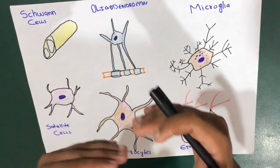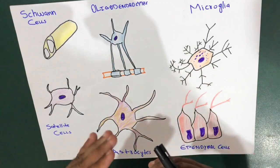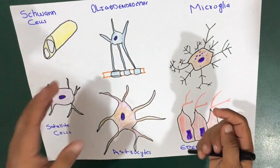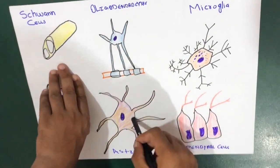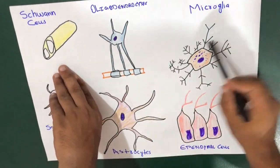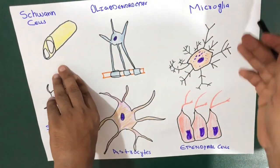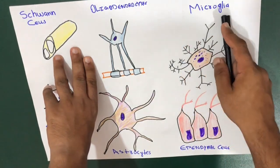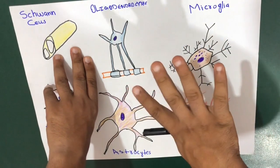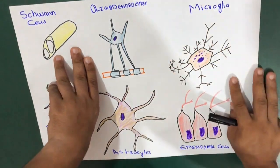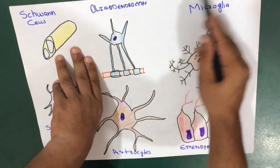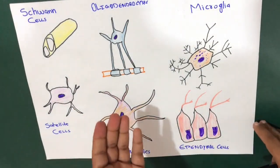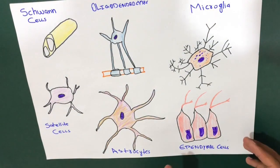Astrocytes — the star-shaped cells — maintain the blood-brain barrier and preserve the chemical environment by recycling ions and neurotransmitters. Microglia are also very important: they remove toxins and cell debris from the central nervous system via phagocytosis. So the cell performing phagocytosis in the central nervous system is the microglia.